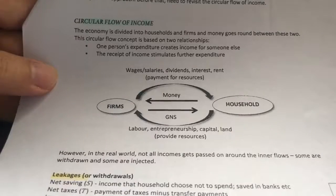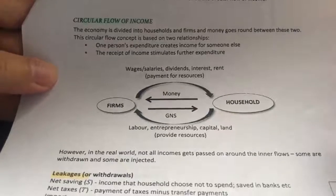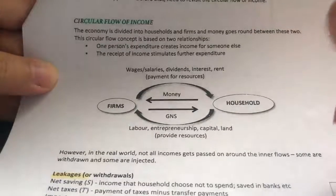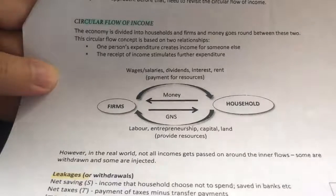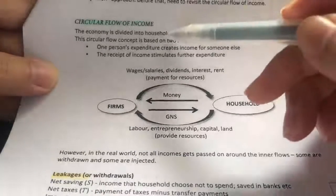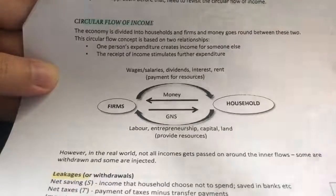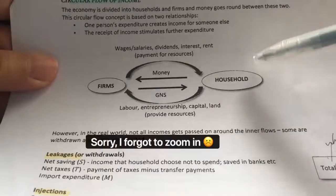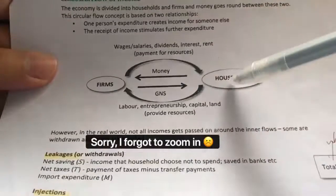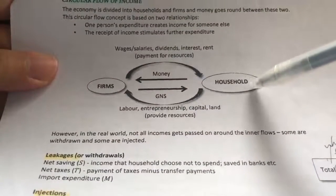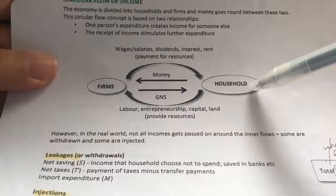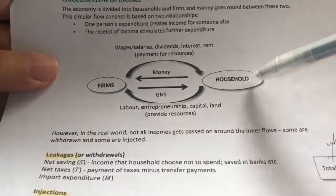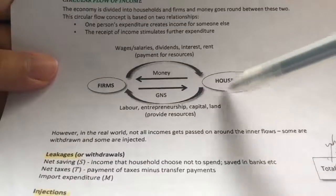So what is the circular flow of income? Remember, we're still in the situation whereby our economy is private and closed. Private and closed simply means that there are only two parties: households and firms. Households are also known as the resource owner. The four resources are land, labor, capital, and entrepreneurship — those are the things that we own.